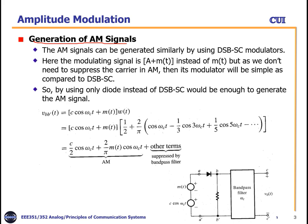In this slide, we will look at how it is different from the generation of conventional double sideband suppressed carrier AM modulation. AM signals can be generated similarly by using a double sideband suppressed carrier modulator as discussed in the previous lecture. Here the modulating signal is A plus M(t) instead of M(t). But as we don't need to suppress the carrier in AM, its modulator will be simpler compared to DSB-SC. In AM, we additionally transmit a separate carrier, so we have a message like A plus M(t) because it contains an additional carrier.